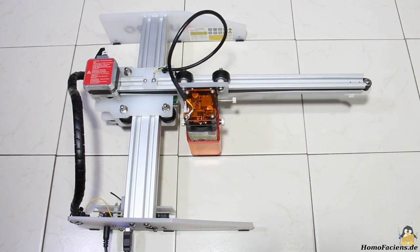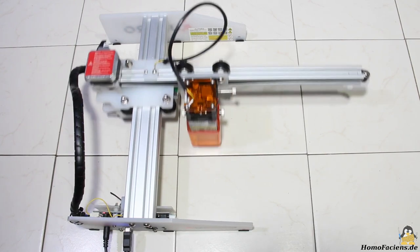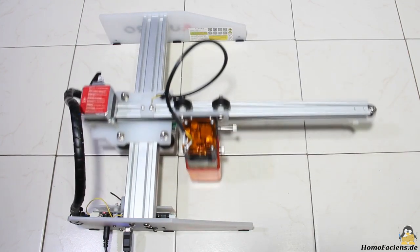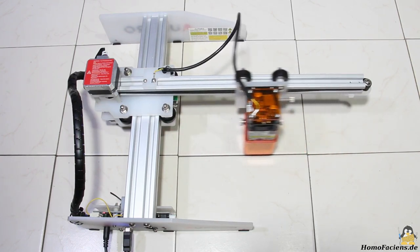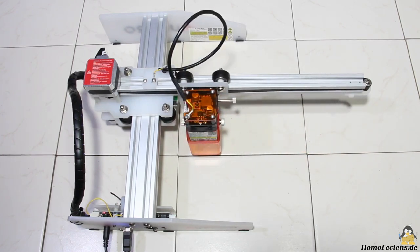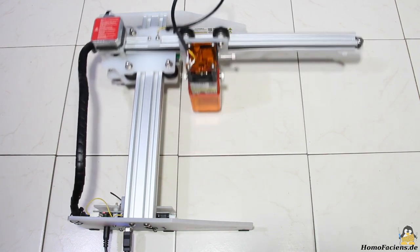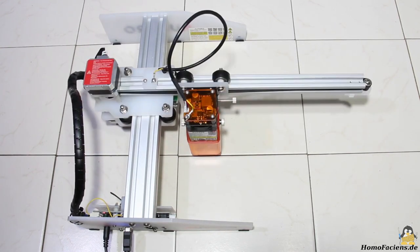The mechanics is composed of 20x20mm extruded aluminum for the X axis and 20x40mm extruded aluminum for the Y axis. The two axes are each driven by a stepper motor via timing belts and they are guided by plastic rollers with ball bearings along the extruded aluminum.